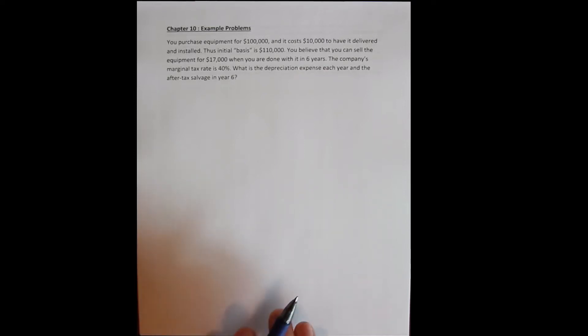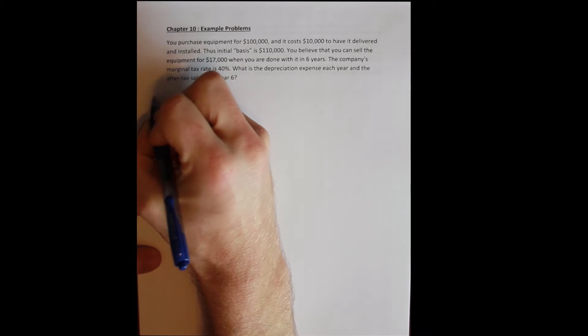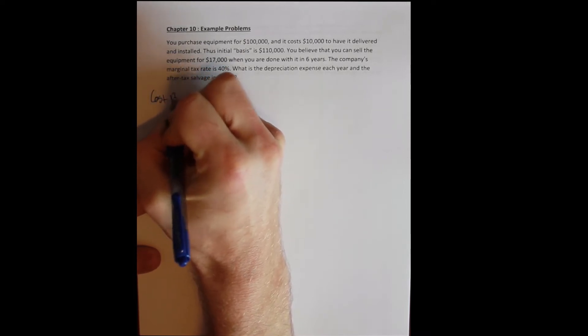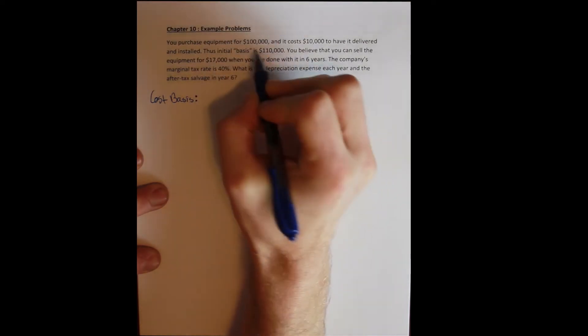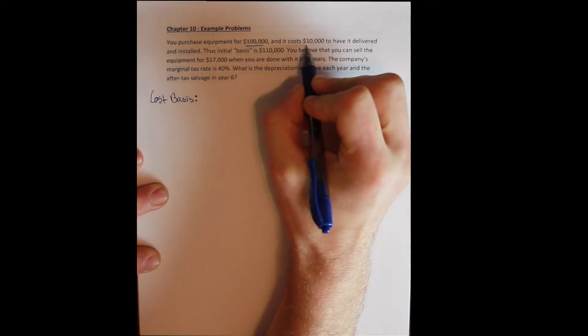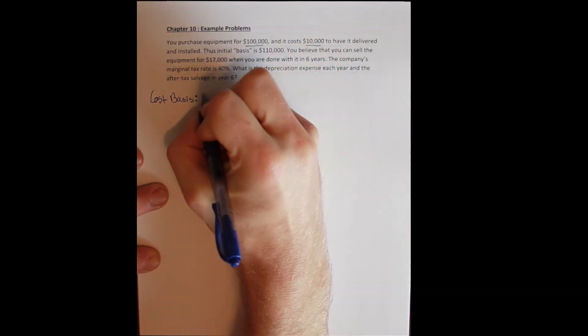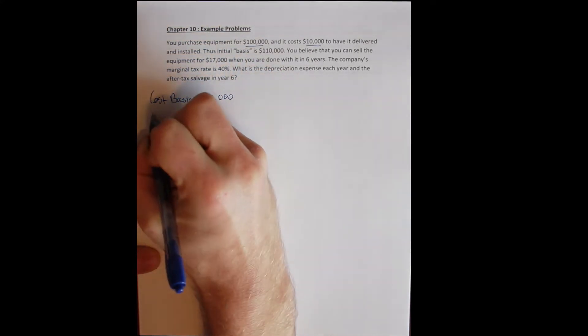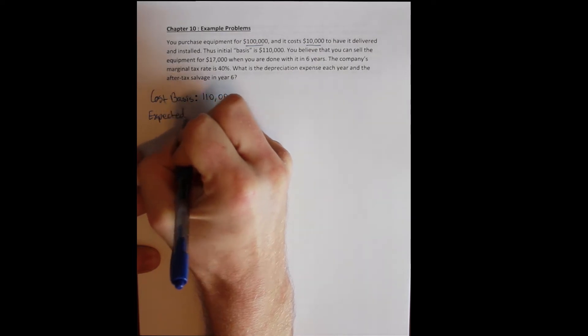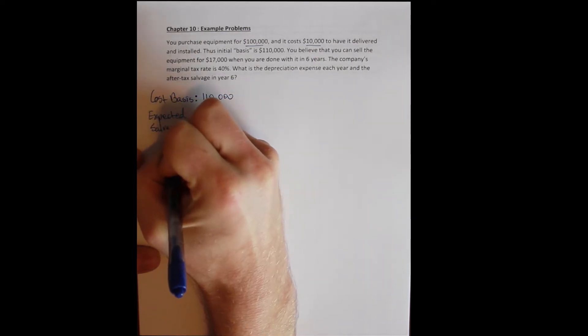So we've got a couple of things. We'll write down the cost basis. This is what the asset initially costs and this includes both the equipment cost and the setup cost. We're allowed to depreciate both of those things. And the expected salvage, this is what we think we can sell it for.